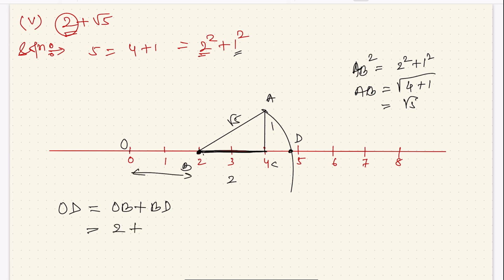Plus BD is how much? BD is equal to BA, right? BA. 2 plus BA. BA is how much? Root 5. 2 plus root 5. You got the number line.